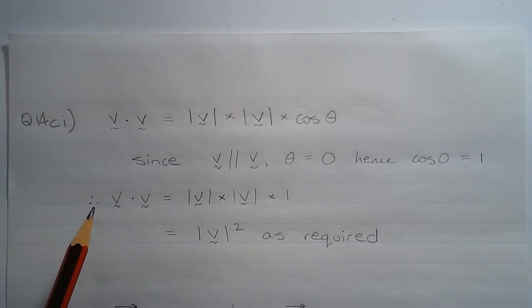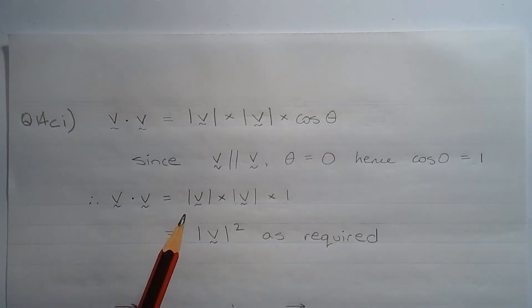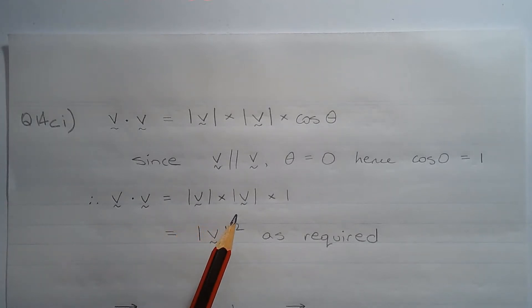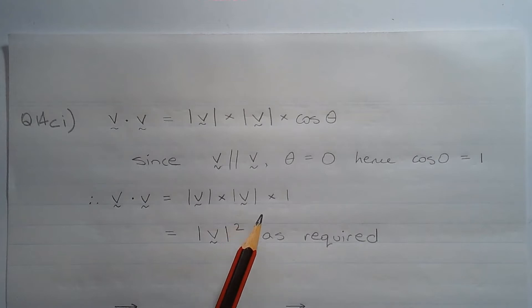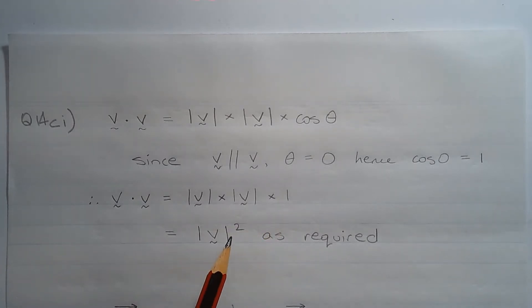Therefore, the dot product of vector v and vector v is equal to the magnitude of vector v multiplied by the magnitude of vector v multiplied by one, which equals the magnitude of vector v squared, as required.